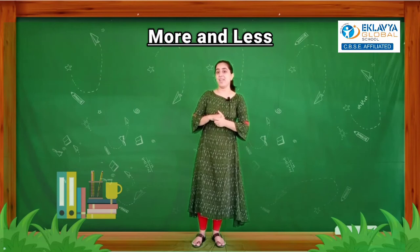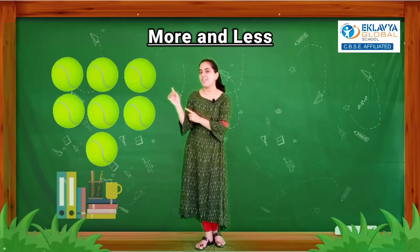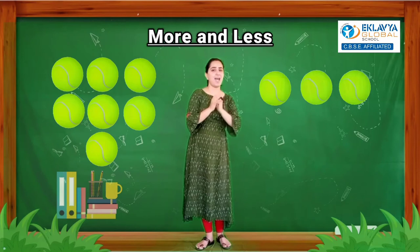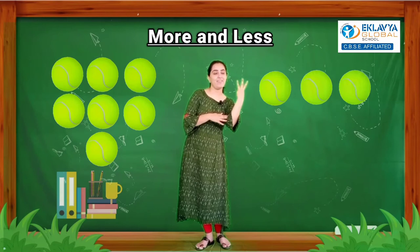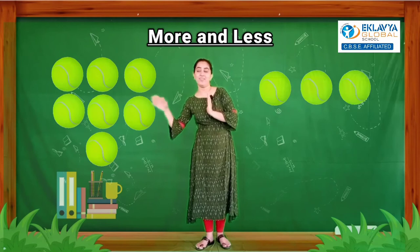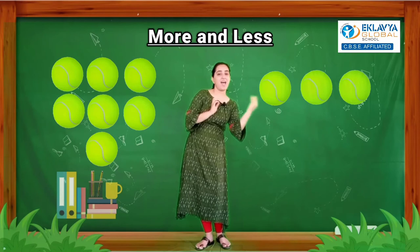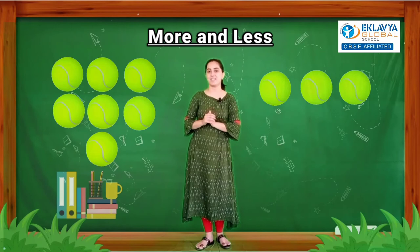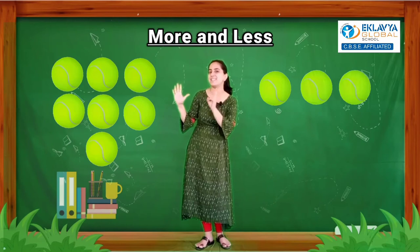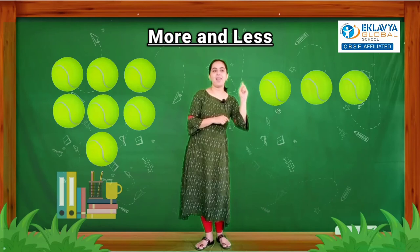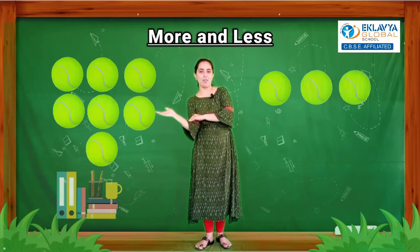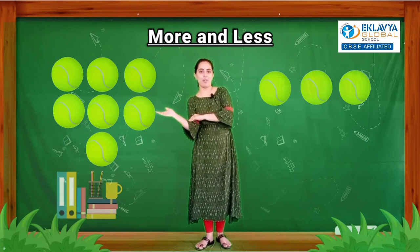Yes kids, you can see here there are seven balls. How many balls are there? Seven. And if we see this side, there are three balls. How many balls are there? Three. So which side has more balls? This side. And which side has less balls? This side. How will you know the concept of more and less? You need to count: one, two, three, four, five, six and seven — seven balls. And this side: one, two and three — three balls. So this side balls are more and this side balls are less.